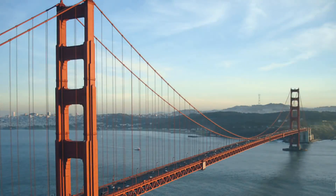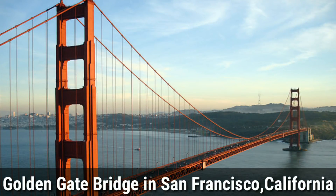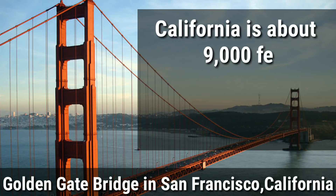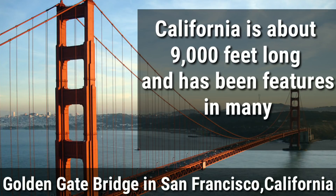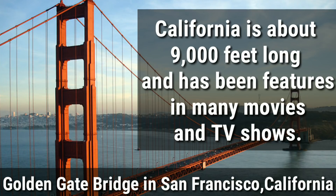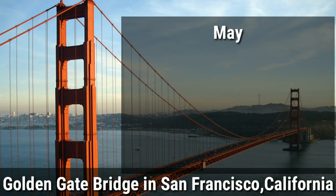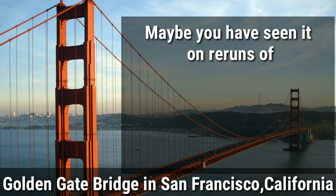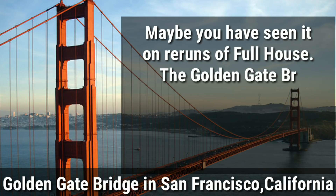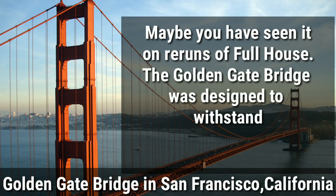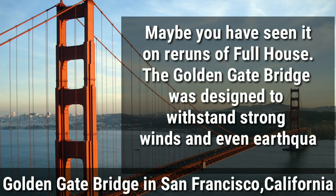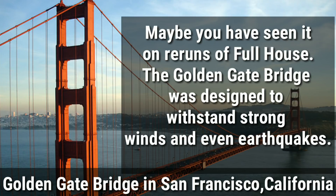Another example: the Golden Gate Bridge in San Francisco, California is about 9,000 feet long and has been featured in many movies and TV shows. Maybe you have seen it on reruns of Full House. The Golden Gate Bridge was designed to withstand strong winds and even earthquakes, and is a great example of civil engineering.